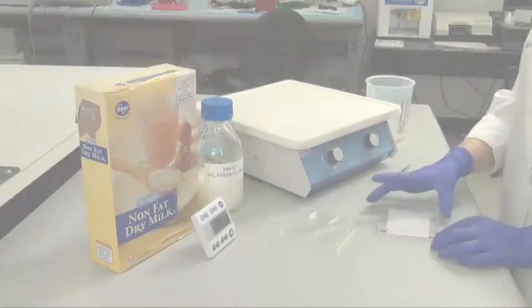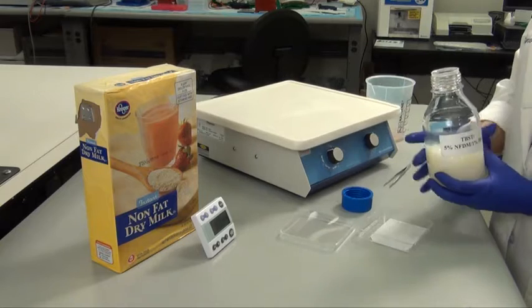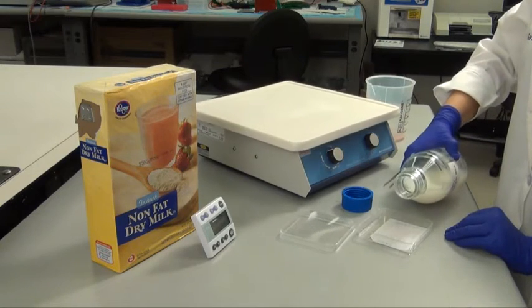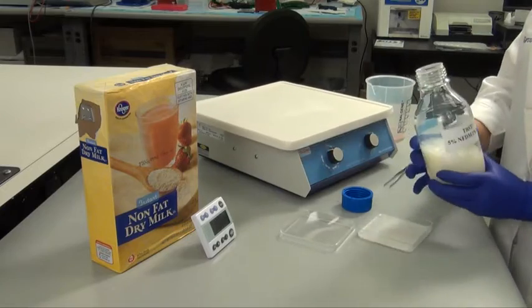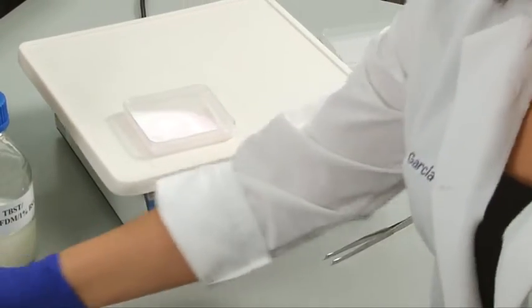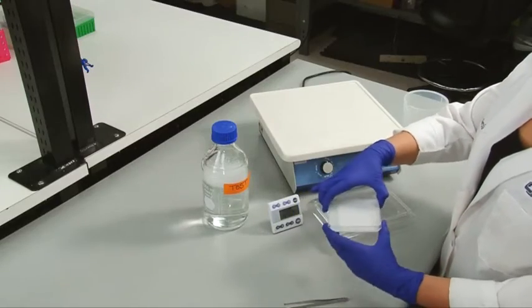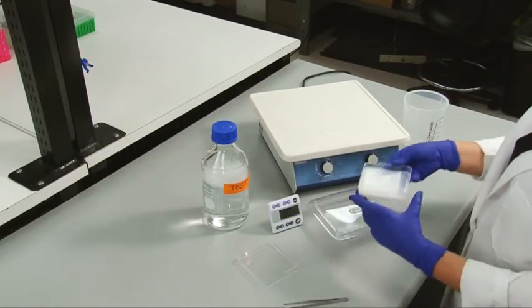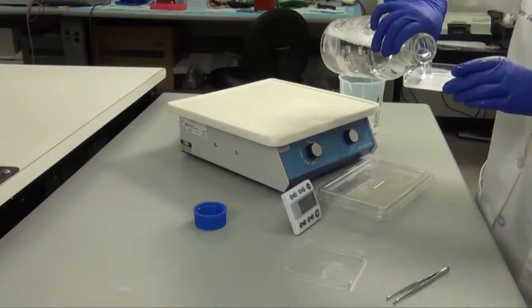We need to block all areas of the blot which do not already contain protein. This will prevent nonspecific binding of the antibodies and reduce overall background signal. Common blocking buffers include 5% nonfat dry milk or BSA in a TBS tween solution. However, do not use milk when probing with phospho-specific antibodies as it can cause high background from its endogenous phosphoprotein, casein. Incubate the membrane with blocking solution for one hour at room temperature under slight agitation.